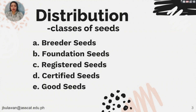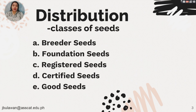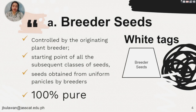For the distribution, we have the classes of seeds. We have breeder seeds, foundation seeds, registered seeds, certified seeds, and good seeds. So let's identify these five ones.